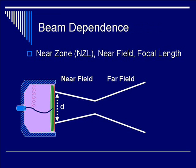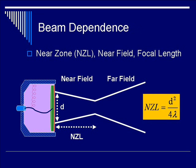The beam diameter, D, is the measurement that can be varied across the beam profile. At the near zone length, NZL, which is known as the focal length, D equals the minimum beam diameter or beam width. NZL is defined as D squared over 4 lambda, where D is the transducer diameter and lambda is the wavelength of the ultrasound beam.